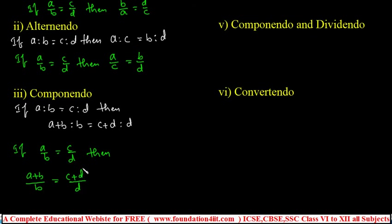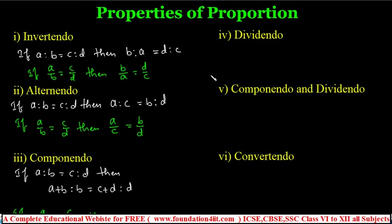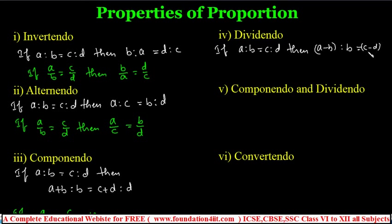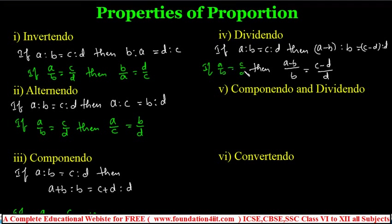Dividendo is the same as componendo but uses subtraction. If a is to b equals c is to d, then we can write a minus b is to b equals c minus d is to d. In fractions: if a by b equals c by d, then a minus b by b equals c minus d by d. This is dividendo.